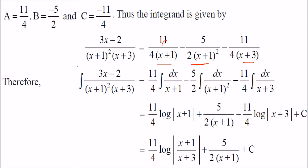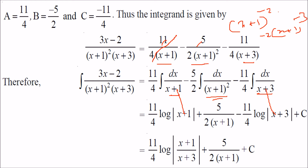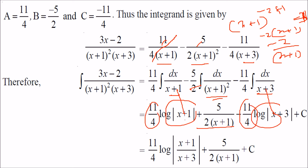Once A, B, C are found, we integrate each term. The integral of 1/(x+1) gives log|x+1|, and 1/(x+3) gives log|x+3|. For the term with (x+2)/(x+1)², write x+2 = (x+1)+1, splitting it into 1/(x+1) + 1/(x+1)², which gives log|x+1| − 1/(x+1). The common factors can be combined, and using log a − log b = log(a/b), you write the combined logarithmic terms as a single log expression.